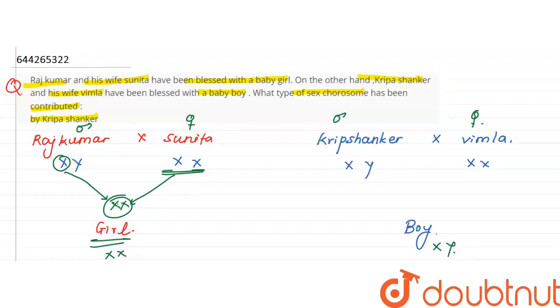Now Kripa Shankar, baby boy, then Vimla will contribute X, and Kripa Shankar for the baby boy will have to contribute Y. Here is X, Y. So in this way the question is, which chromosome did Kripa Shankar contribute? That is Y chromosome.